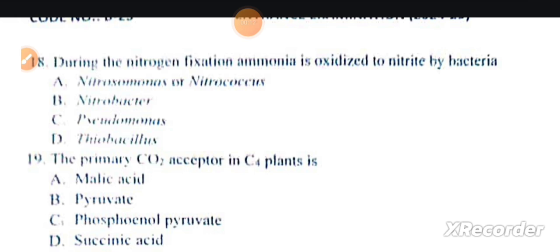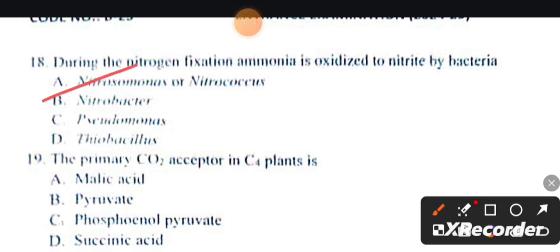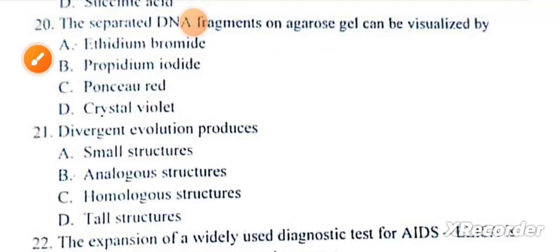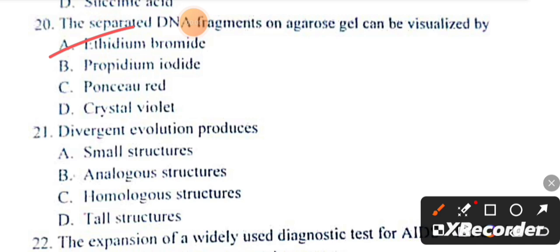The primary CO2 acceptor in C4 plants is phosphoenolpyruvate. Separated DNA fragments on agarose gel can be visualized by ethidium bromide.